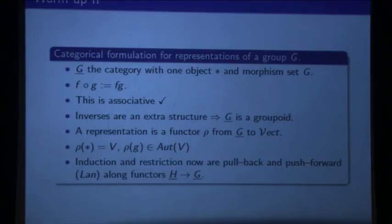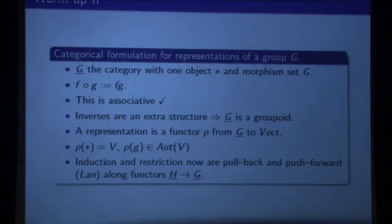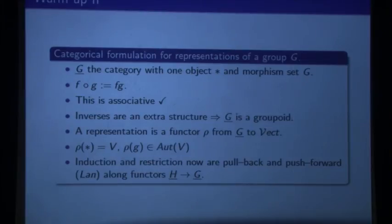What kind of universal constructions can you do with this? If you have a subgroup H and a morphism from H to V, you get a functor. You can certainly pull back — that's restriction. But you can also push forward — that's categorically a left Kan extension. You can actually compute it. And another universal construction: you can take co-invariants and invariants on the space. These are also categorical constructions — they're limits and co-limits. So all these things you usually do are just limits, co-limits, Kan extensions, push-forwards, pull-backs. And what I'm going to do is generalize all this setup to something much more complicated, but do the same stuff. That's the idea.